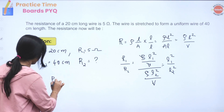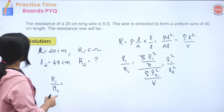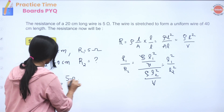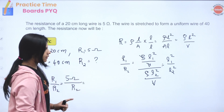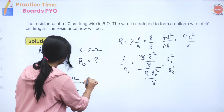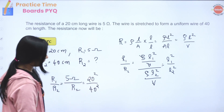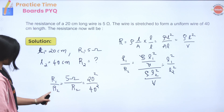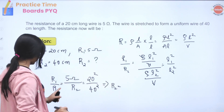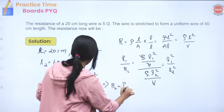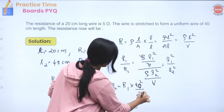So R1/R2 equals L1²/L2². That is 5 ohm divided by R2, which equals 20² divided by 40². Therefore R2 equals R1 multiplied by 40² divided by 20².